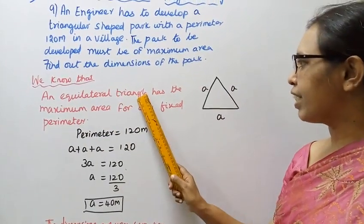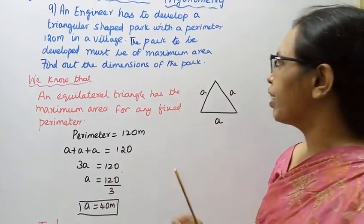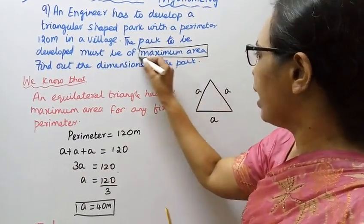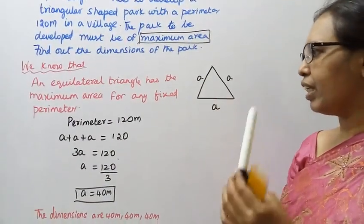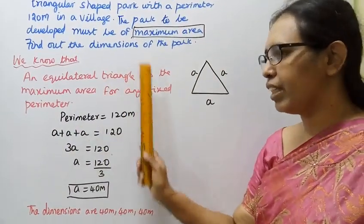An equilateral triangle has the maximum area for any fixed perimeter. This is equilateral triangle to use the formula.